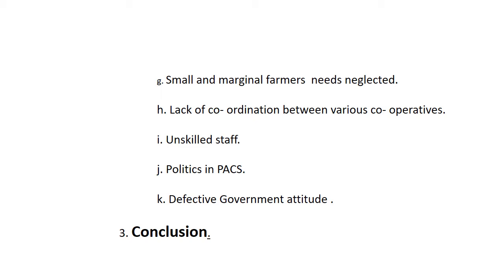The next problem is lack of coordination between various cooperative societies. PACS should work systematically, and wise management depends upon coordination between different types of cooperative institutions working in rural areas. At present, in villages where cooperative movement has developed, we have credit cooperatives (PACS), dairy cooperatives, marketing cooperatives, non-agricultural credit cooperative societies, and consumer cooperative societies. In some villages, three or four primary level cooperative institutions are working. But PACS is the backbone of all cooperative institutions.